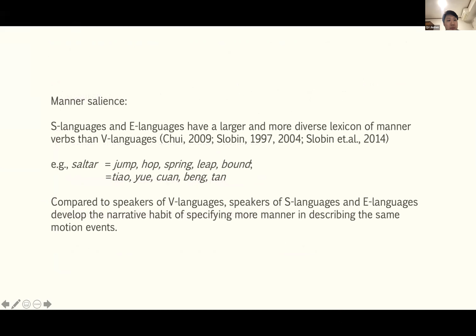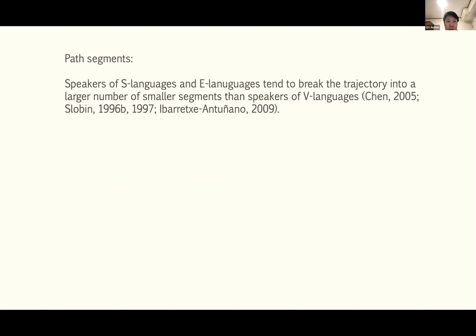Manner salience means that S-language and E-language speakers have a larger and more diverse lexicon of manner verbs than V-language speakers. Compared to speakers of V-languages, speakers of S-languages and E-languages develop a narrative habit of specifying more manner when describing the same motion events.